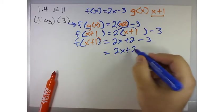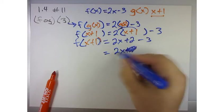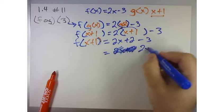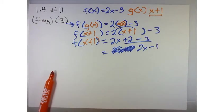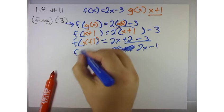Or 2x plus 2—oh wait, 2x minus 1, right? Because we combine like terms: 2 minus 3 equals negative 1. So this is f of g of x.